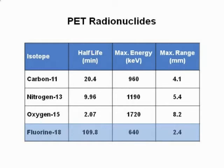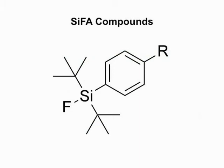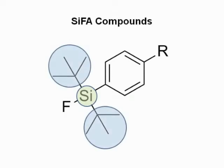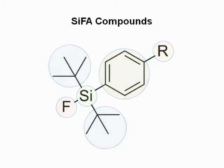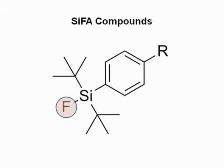In this video, we introduce a fluorine-18 labeling procedure based on the isotopic exchange at the silicon atom of a SiFA compound. The SiFA group consists of a central silicon atom connected to two tertiary butyl groups, a derivatized phenyl moiety, and a non-radioactive fluorine atom. When attached to a biomolecule, the SiFA building blocks easily exchange fluorine-19 for radioactive fluorine-18, due to the low activation energy of the isotopic exchange reaction. The labeling precursor and fluorine-18 labeled compound are chemically identical, which makes purification very easy.